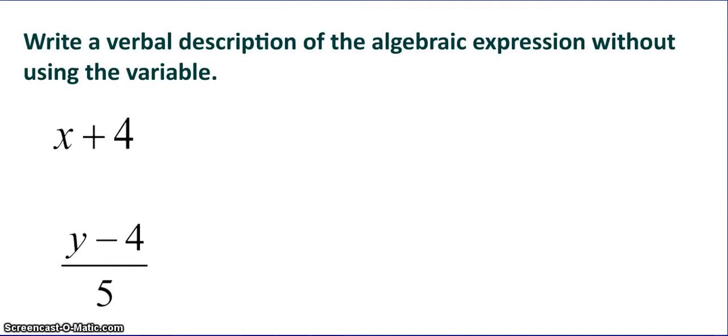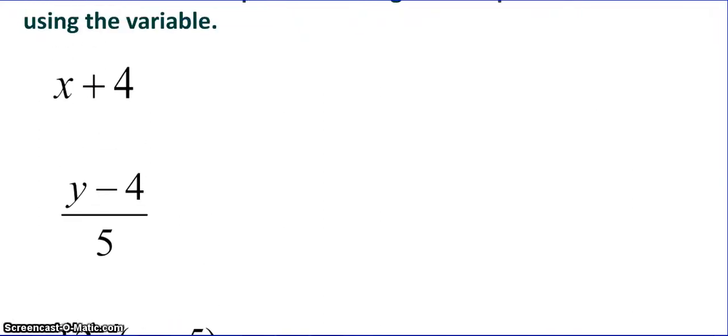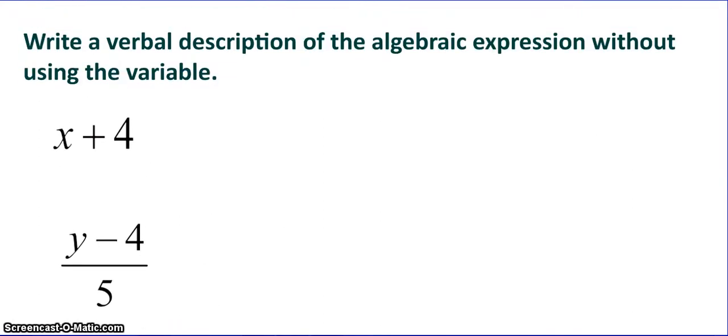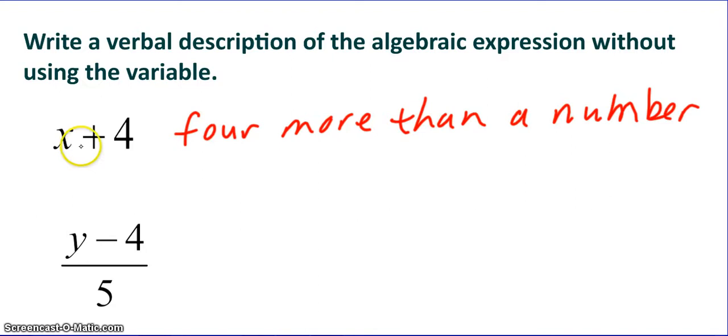Okay, next I want you to take these next three examples, and we are going to write a verbal description of the algebraic expression without using the variable. So we'll do the first one together. So if I have x plus 4, I want to write a verbal description for that. So I would say 4 more than a number. So a number is representing the variable. I don't want to use x. So x plus 4 as a verbal description is 4 more than a number.